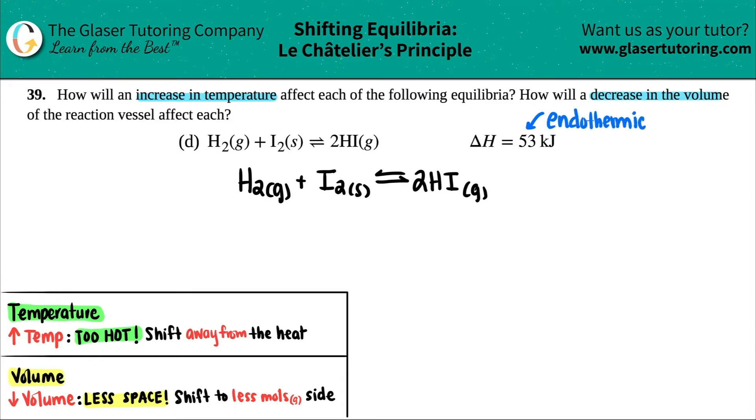Remember that if the delta H was a negative, it would be exothermic, but endothermic means that you're absorbing heat. If you're absorbing heat, which side would the heat be on? The heat's going to be on the reactant side. If it was exothermic, the heat's going to be on the product side.